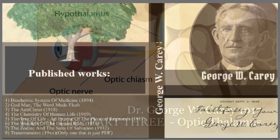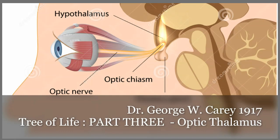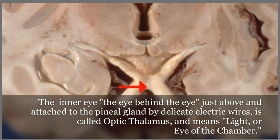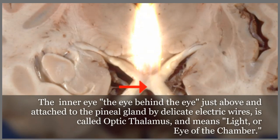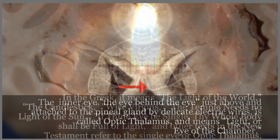Dr. George Washington Carey, 1917, Tree of Life, Part 3: The Optic Thalamus, or The Optic Chasm. The inner eye — "the eye behind the eye" — just above and attached to the pineal gland by delicate electrical wires. This is called the optic thalamus, the optic chasm, and means "light, or eye of the chamber."